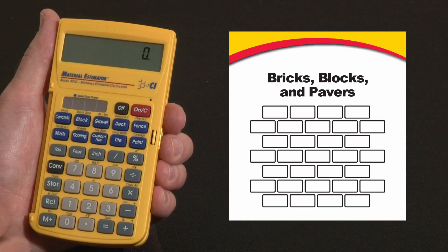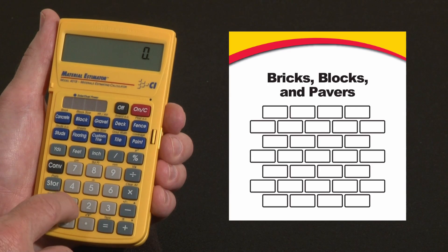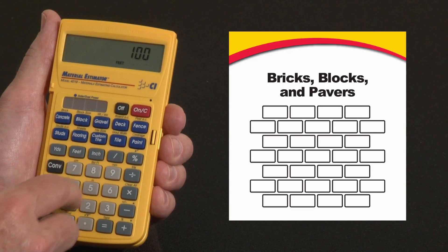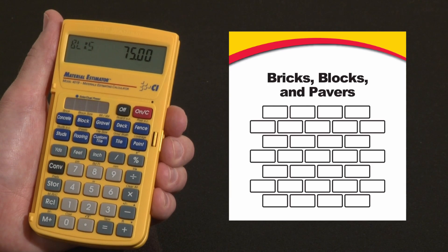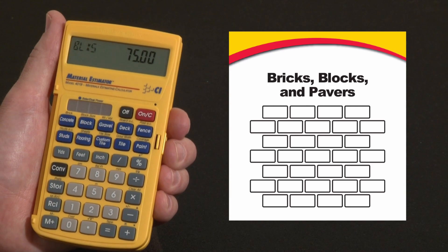If you have a single course of blocks and you just want to figure out how many you need, say for 100 feet, convert to blocks, there's going to be 75 blocks in that row, whether it's for a footing, for a fence, for a property line or something else.